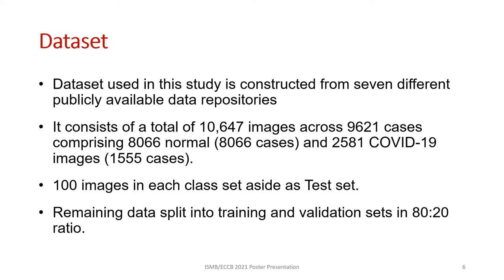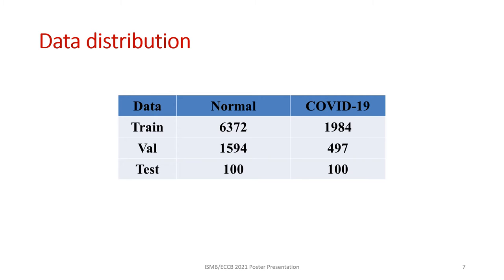The dataset used in the study was constructed from seven publicly available repositories. It has more than 10,000 images from more than 9,000 cases. 100 images in each class were used for evaluating the model, and the rest of the data was split into training and validation sets. The data distribution across the different sets is given in the table. Clearly, we can see a data imbalance.